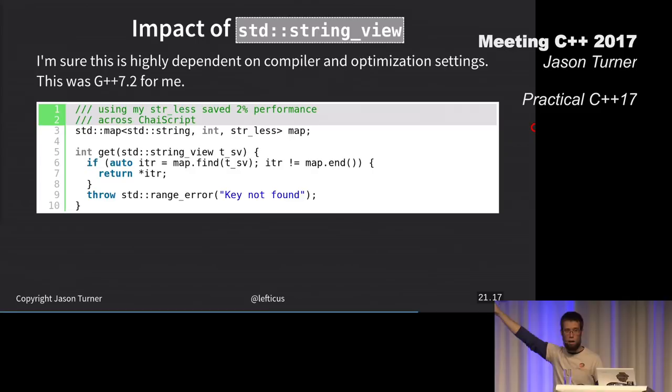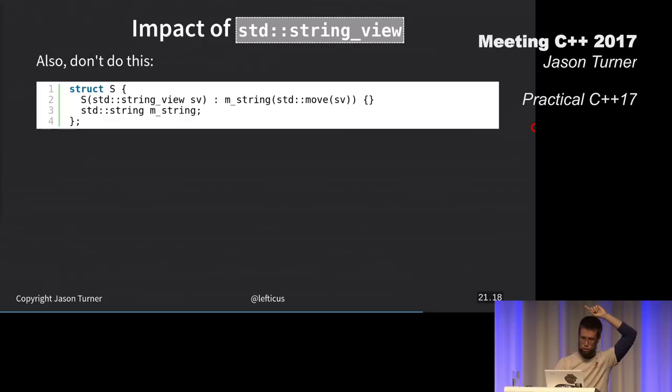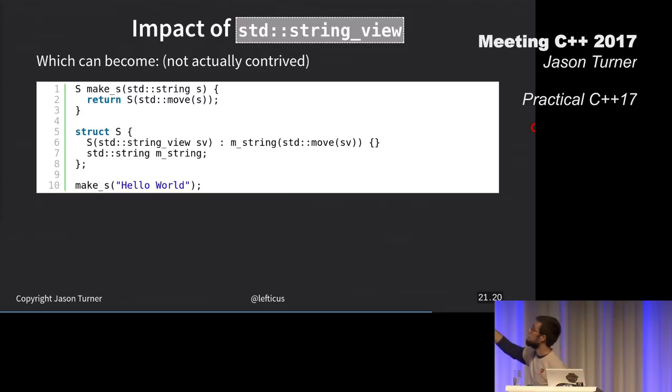This avoids having to create the string view. This might seem trivial, but I will absolutely guarantee this is highly dependent on which particular compiler and which standard library you're using. Implementing my own less than transparent comparator was a 2% savings on the system. This is huge for me. My point is, string view is awesome, but you need to be aware of it.